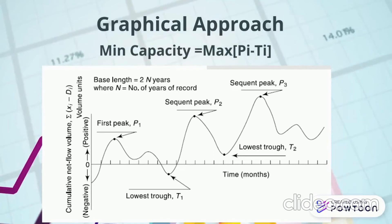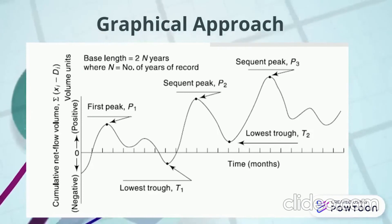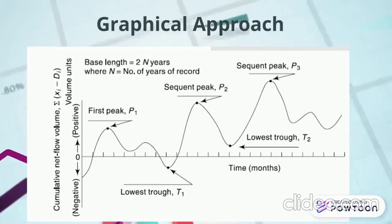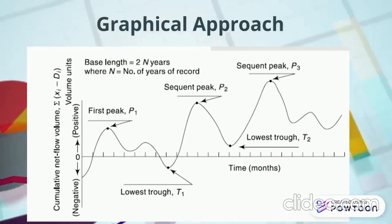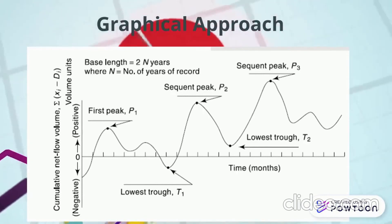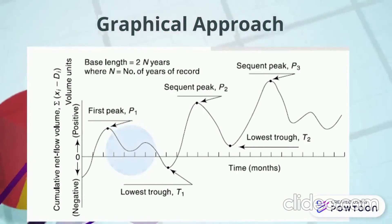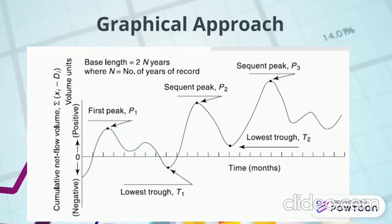Now, why this? Let us understand. As you can see from the graph, the cumulative volume is increasing till first peak, then it's decreasing till the period of trough, and then again it's increasing. What this means is that the net flow, that is inflow minus outflow, was positive till the period, till the time where first peak occurred, and then the net flow became negative, which resulted in decreasing the cumulative volume. And the net flow was negative from the period of first peak to trough. So, now we call this period as drought period, or critical period.